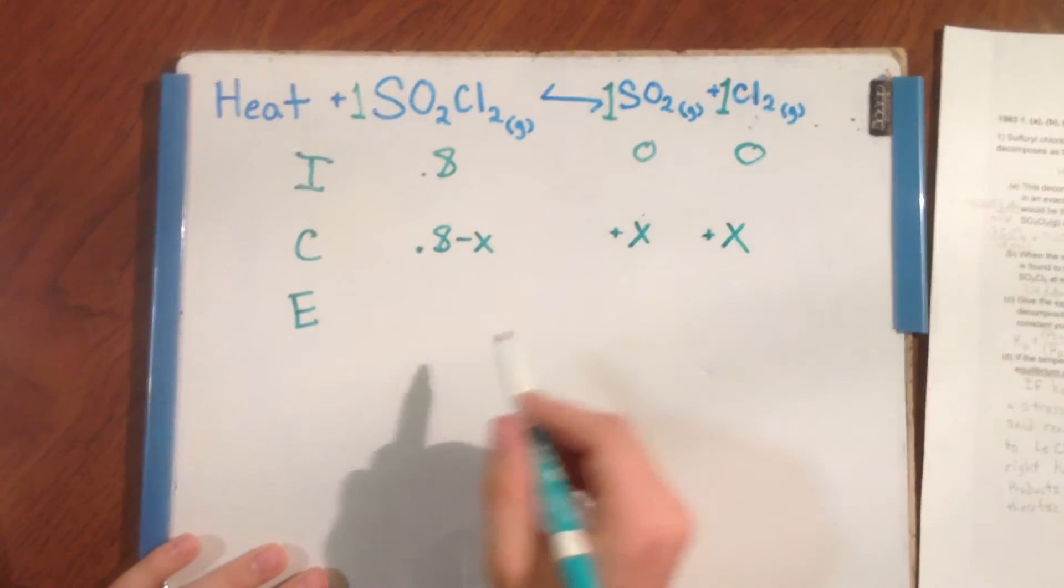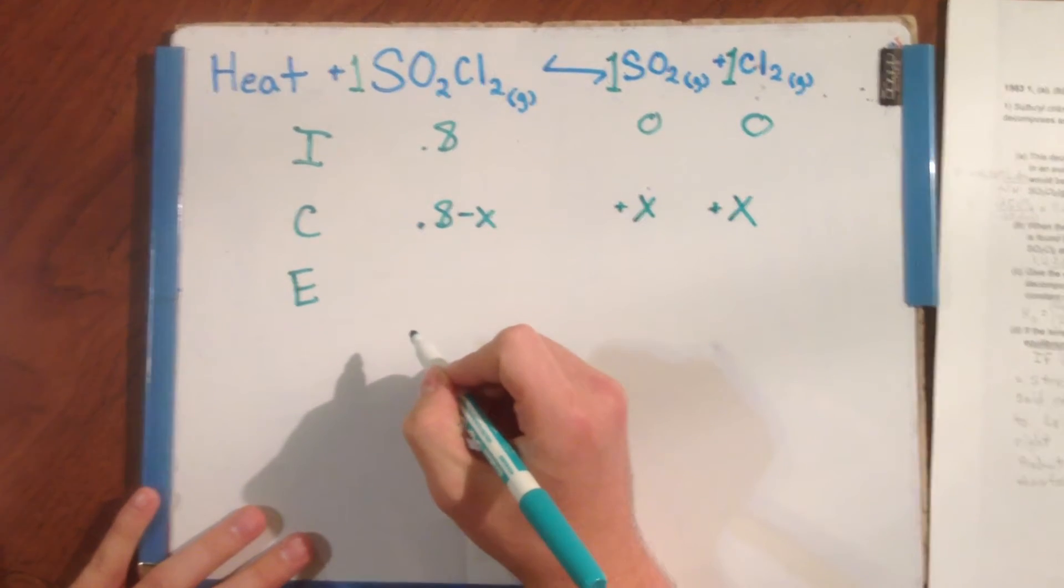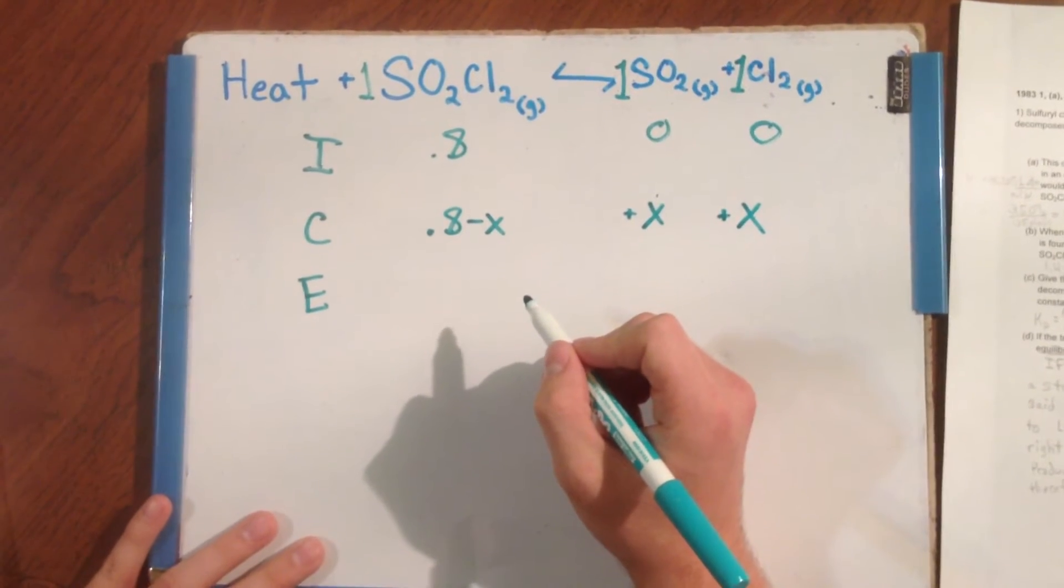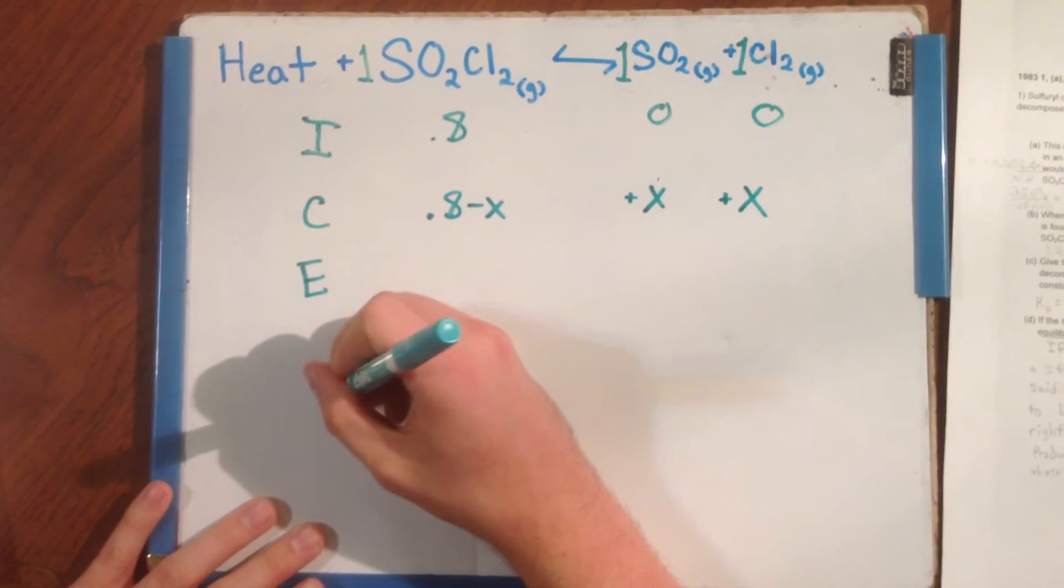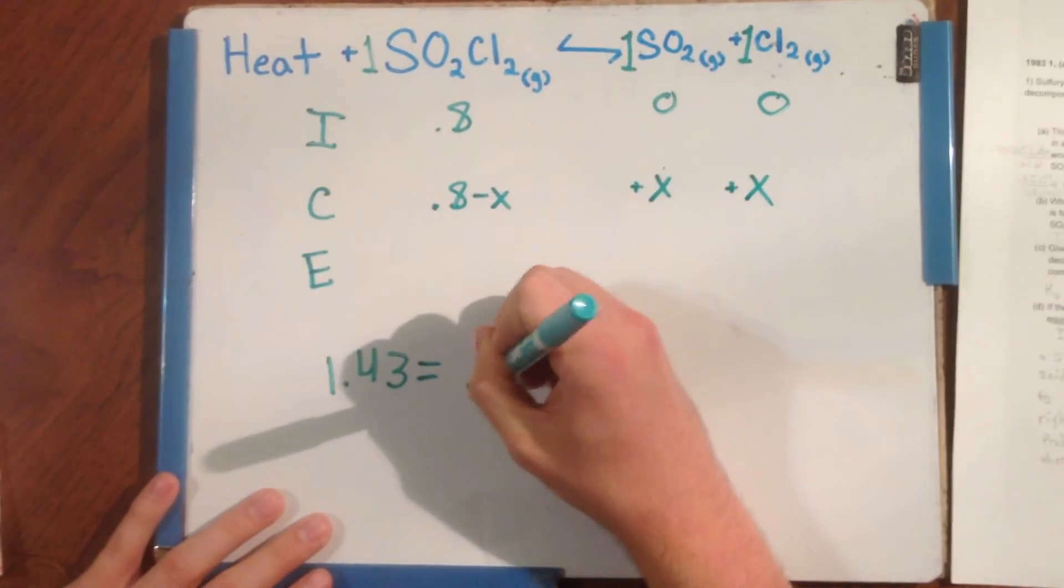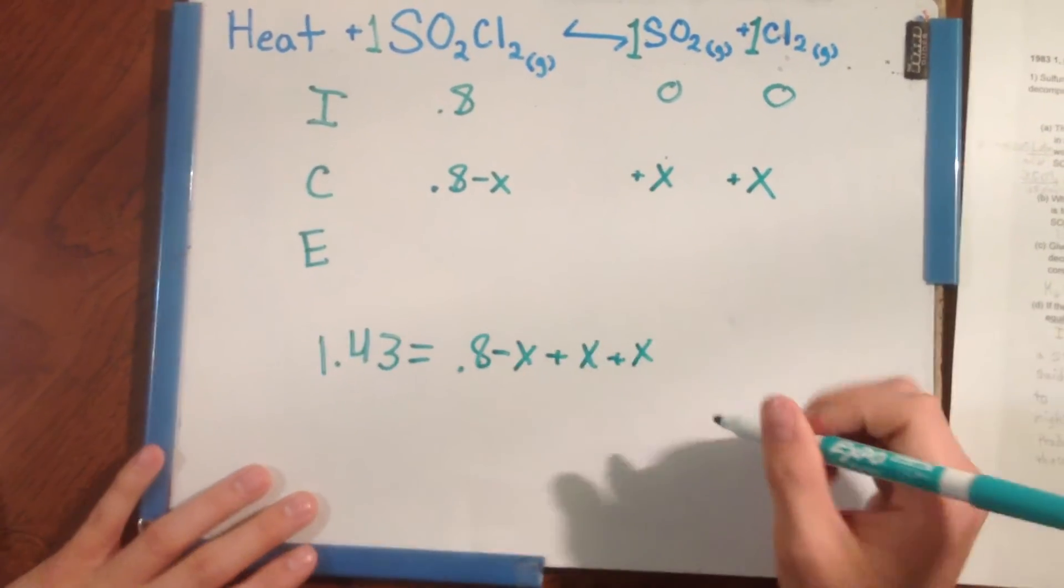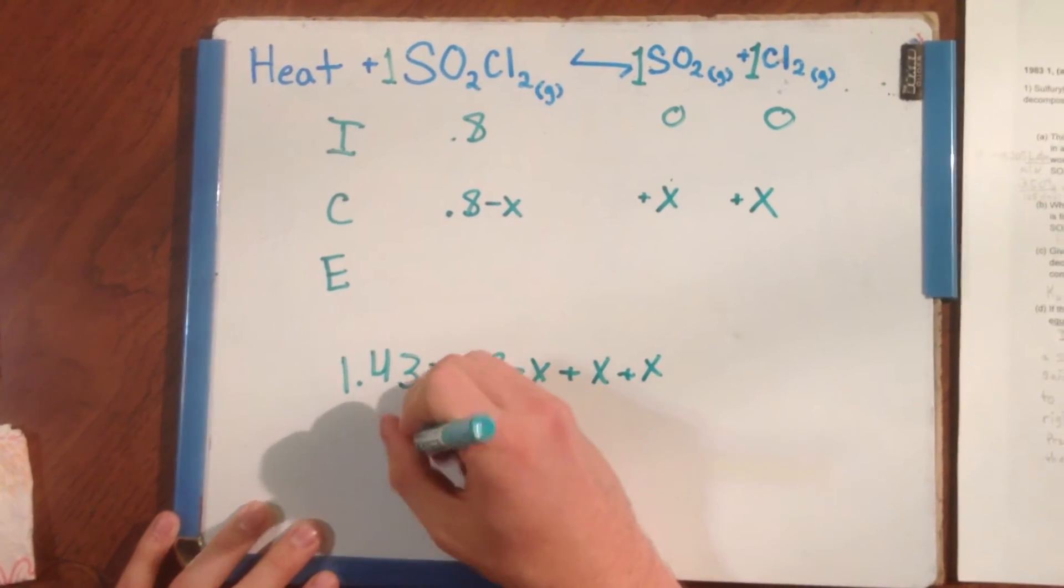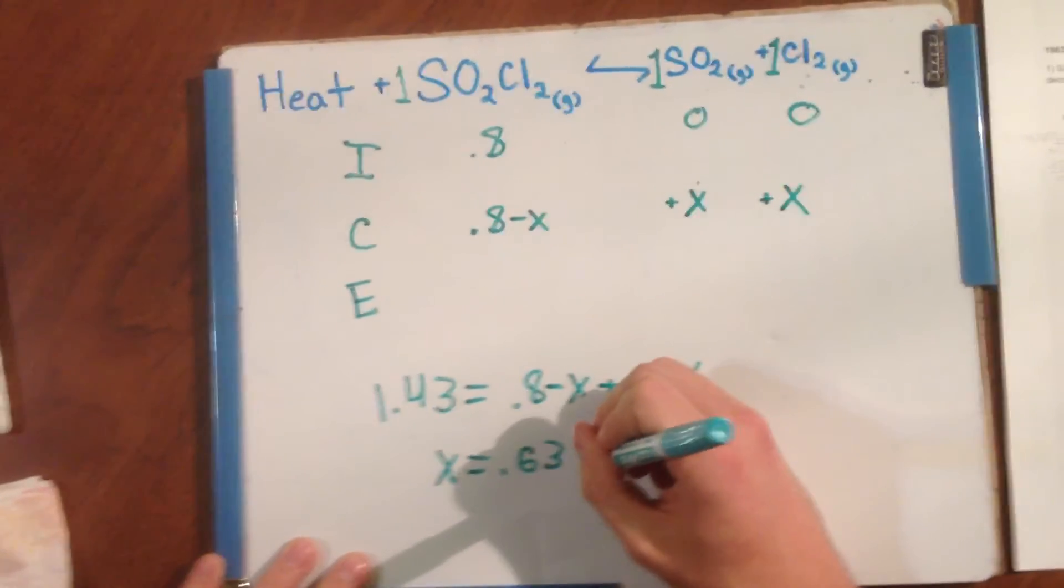We use this to fill the P total equals PSO2Cl2 plus PSO2 plus PCl2 equation. And come up with 1.43 equals 0.8 minus X plus X plus X. If we simplify and solve, we come up with X equals 0.63 atmospheres.